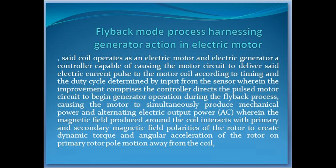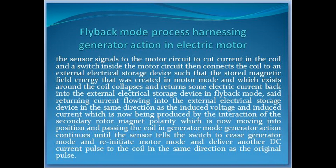A controller capable of causing the motor circuit to deliver said electric current pulse to the motor coil according to timing and a duty cycle determined by input from the sensor, wherein the improvement comprises: the controller directs the pulsed motor circuit to begin generator operation during the flyback process, causing the motor to simultaneously produce mechanical power and alternating electric output power (AC). The magnetic field produced around the coil interacts with primary and secondary magnetic field polarities of the rotor to create dynamic torque and angular acceleration of the rotor. On primary rotor pole motion away from the coil, the sensor signals to the motor circuit to cut current in the coil, and a switch inside the motor circuit then connects the coil to an external electrical storage device such that the stored magnetic field energy that was created in motor mode collapses and returns some electric current back into the external electrical storage device in flyback mode.